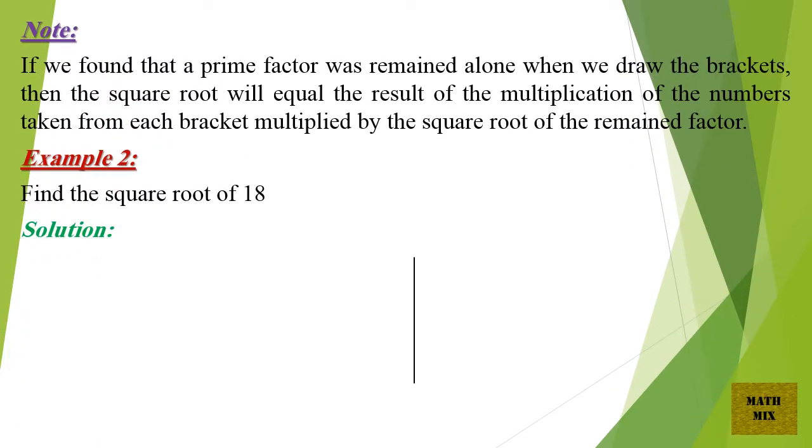Note: If we found that a prime factor remained alone when we draw the brackets, then the square root will equal the result of the multiplication of the numbers taken from each bracket, multiplied by the square root of the remained factor.